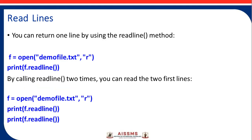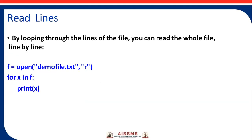Next is the readline method. You can return one line by using the readline method: f = open('demofile.txt'), then print(f.readline()). By calling readline() two times, you can read the first two lines. By looping through the lines of the file, you can read the whole file line by line: for x in f: print(x).